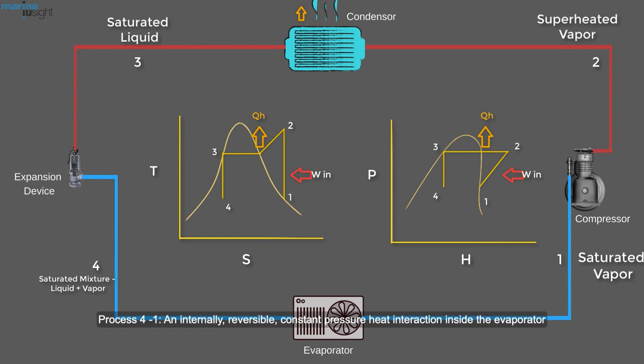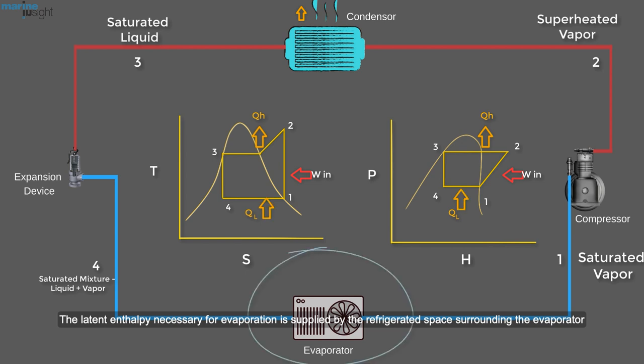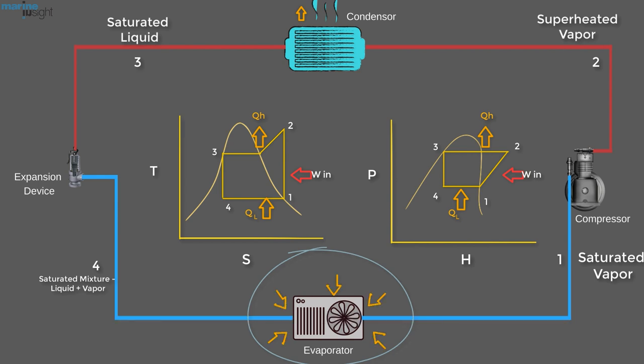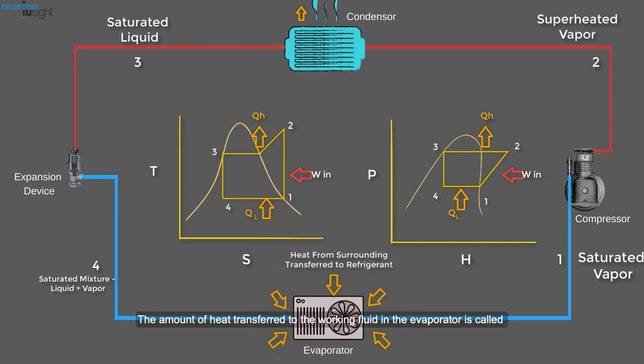Process 4-1: An internally reversible constant pressure heat interaction inside the evaporator, in which the refrigerant two-phase mixture is evaporated to a saturated vapor at state point 1. The latent enthalpy necessary for evaporation is supplied by the refrigerated space surrounding the evaporator. The amount of heat transferred to the working fluid in the evaporator is called the refrigeration load.